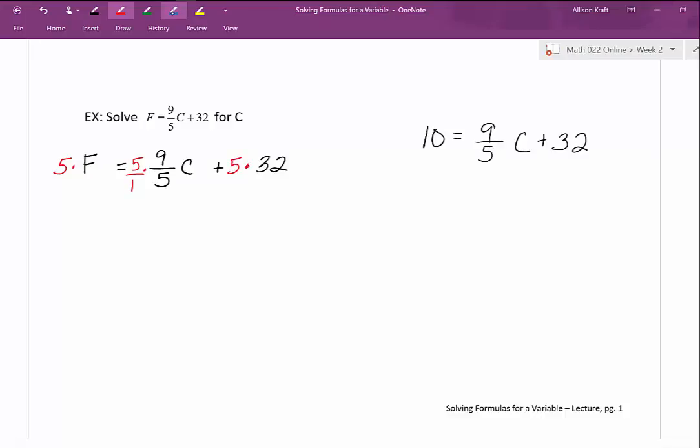The whole point of this is to eliminate any fractions that we have. We get 5F equals. In this pair, I do have some simplifying to do. 5 goes in once, 5 goes in once. When I multiply straight across, I get 9C plus 160.